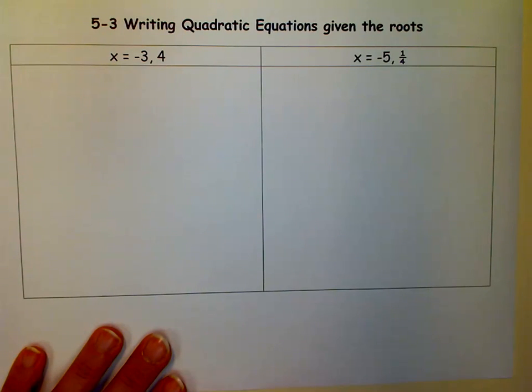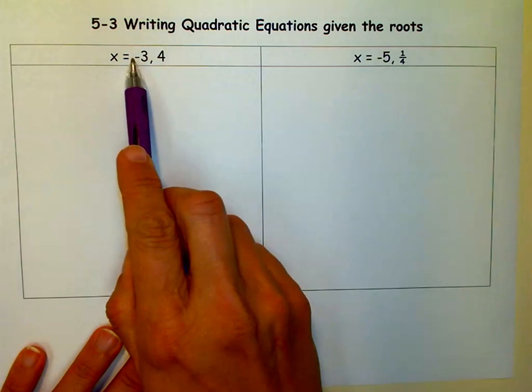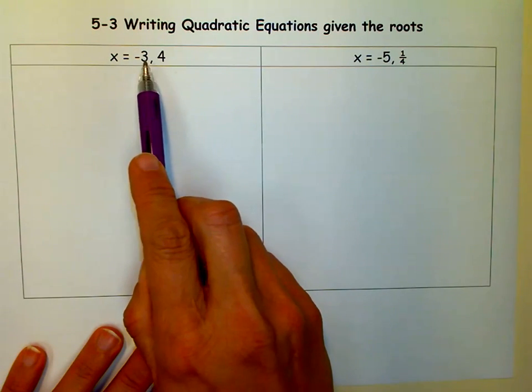Remember, roots, x-intercepts, solutions, zeros, those are all the same. But they're telling us our x-intercepts, or our roots, are negative 3 and 4.